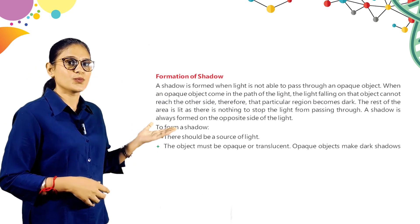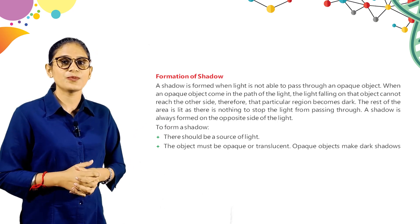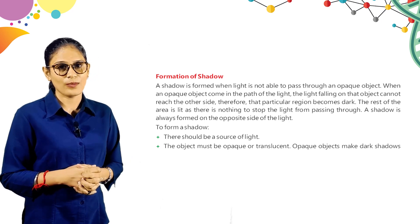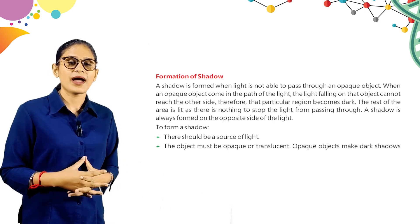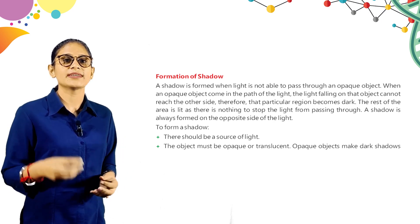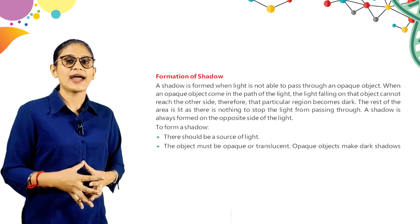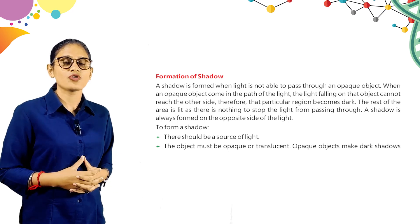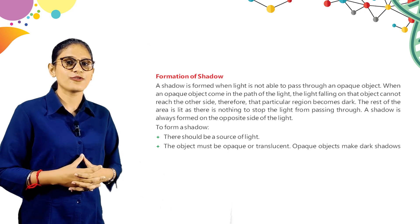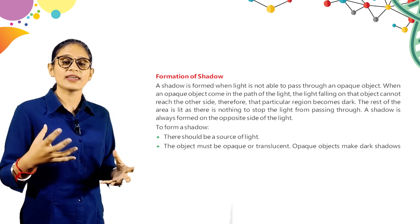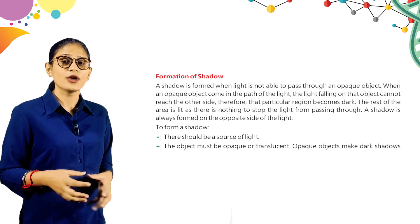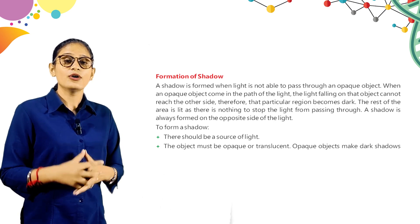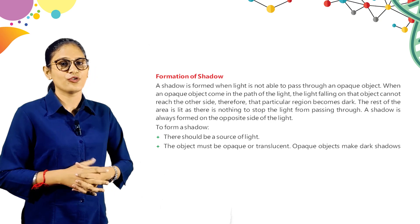Here is formation of shadow. A shadow is formed when light is not able to pass through an opaque object. When an opaque object comes in the path of light, the light falling on the object cannot reach the other side — therefore, that particular region becomes dark. The rest of the area is lit as there is nothing to stop the light from passing through. A shadow is always formed on the opposite side of the light source.